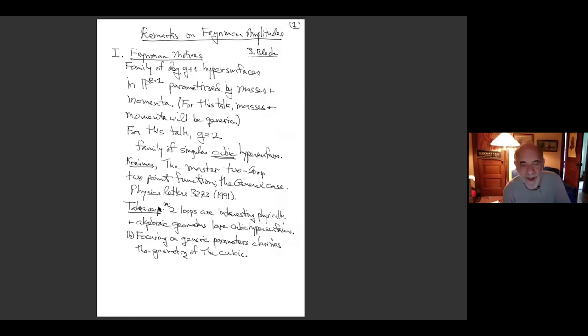Basically, the takeaways - the first takeaway, which I think is worth keeping in mind when you talk to a mathematician, is you want to convey what's interesting to physics. The takeaway, which was conveyed by that paper, was that two loops are already an interesting physical problem. The amplitude for two-loop graphs is an interesting physical problem, and the algebraic geometers love cubic hypersurfaces. Degree two hypersurfaces are too cold, and degree four hypersurfaces are, for many purposes, too hot. But degree three hypersurfaces are just right, and a mathematician feels they can do something with a cubic hypersurface. So even though the story is complicated, it's approachable.